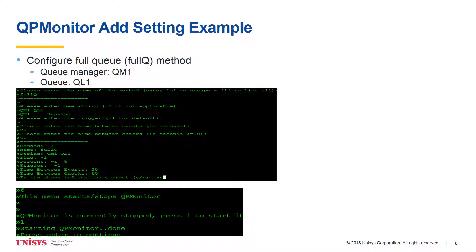The QP Monitor add setting example adds the Full Q method for the queue manager QM1 and local queue QL1. The queue manager and queue in this example need to be created before adding to the configuration. The string input takes the queue manager name and queue name, separated by a space. The default triggering of -1 is used. Also, 20 seconds is entered for the time between events and 60 seconds for the time between checks. Once the accuracy of this information is confirmed, the new entry will be saved, the default menu will appear, and option 6 can be entered to start the QP Monitor.